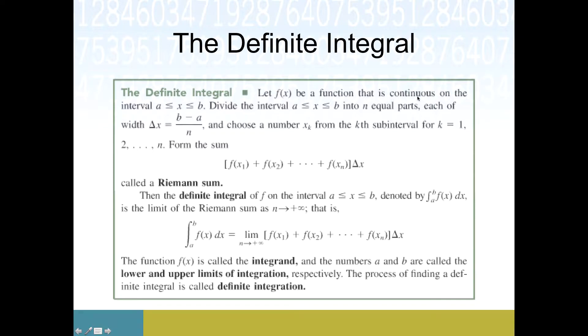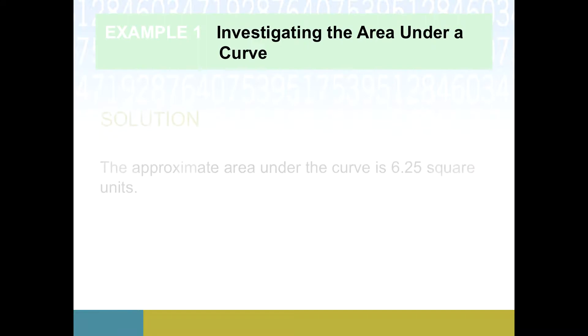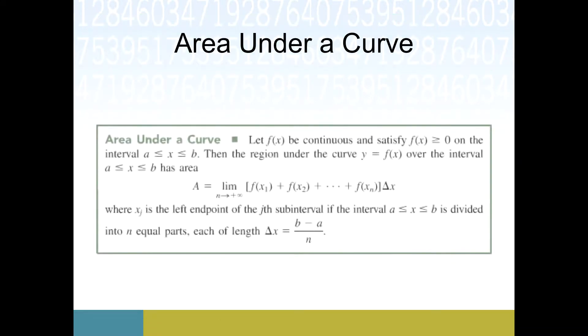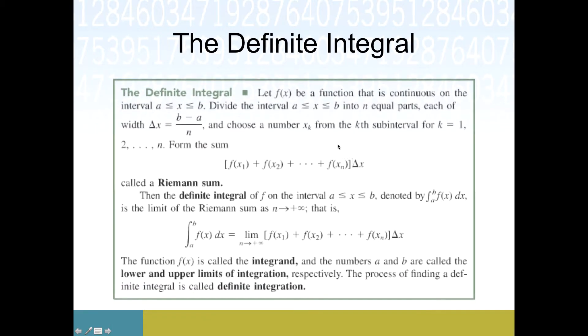We assume that f is continuous on some interval, and a lot of this language should remind us of the area under a curve definition from the previous video. This limit that has to do with how many rectangles we've used is the same limit that occurs in the definition. The Riemann sum is basically the areas of the rectangles.